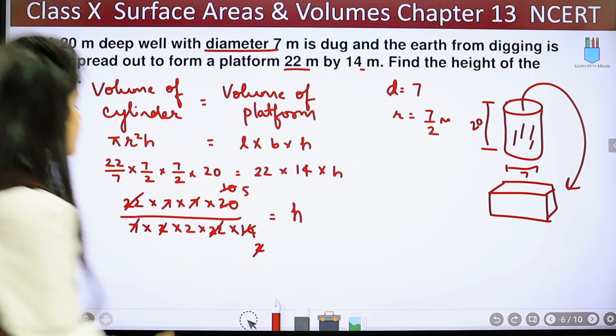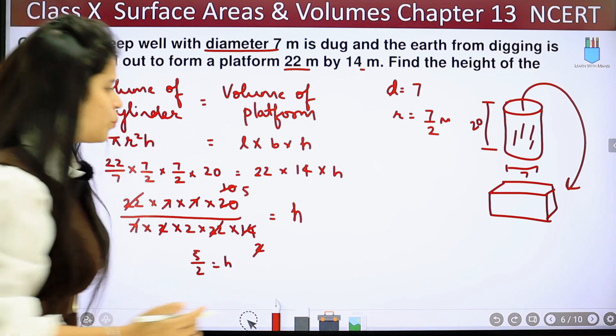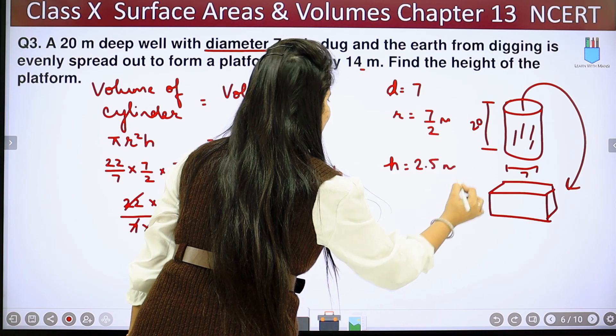So here we have 5 and rest here, and below 2. So that means here, 5 upon 2 equals to h. So we can simply take it as 2.5. So the value of h has come to 2.5 meters.